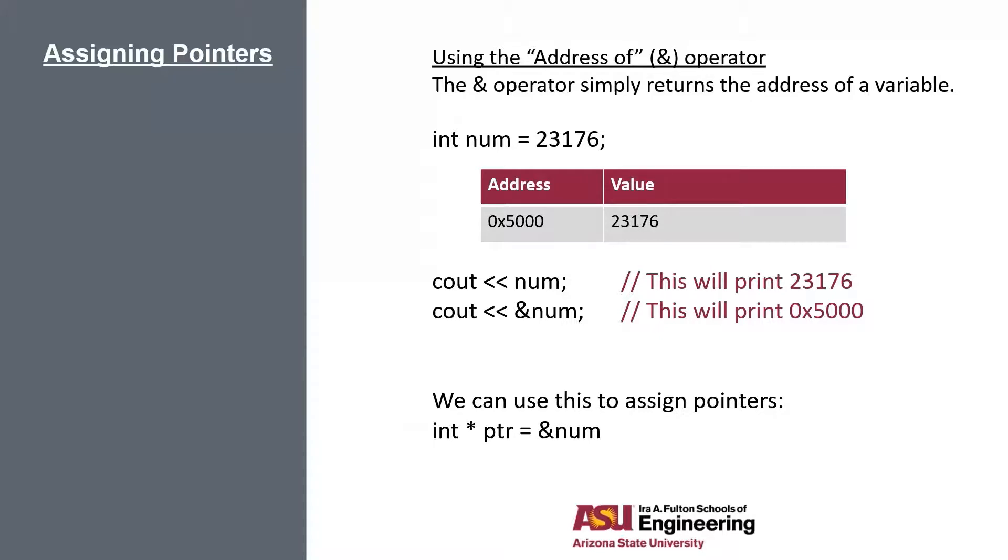Now we can use this ampersand address of operator to assign pointers. Let's use our syntax that we just learned: int star pointer to initialize or declare the pointer. Then we're going to set it equal to the address of num. Remember, pointers are variables that hold memory addresses, so we always have to set it equal to a memory address. In this case, the memory address is 0x5000, so our ptr pointer will have the address 0x5000.